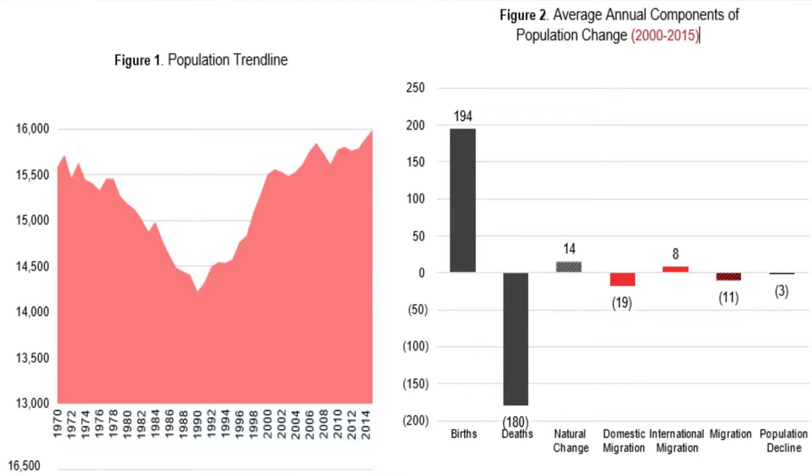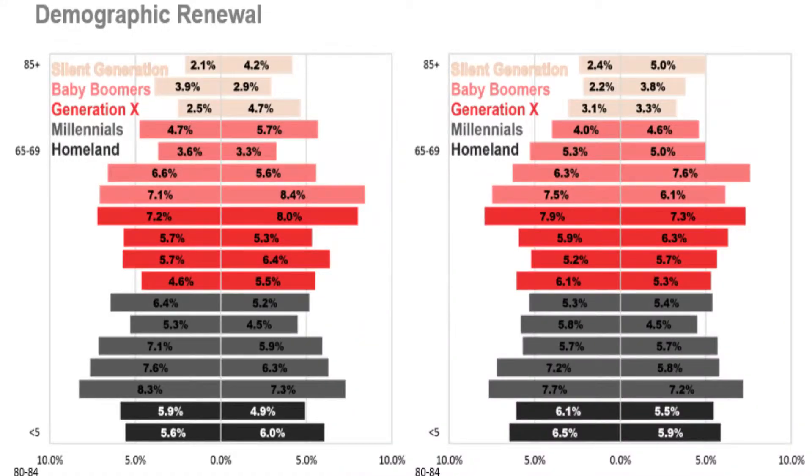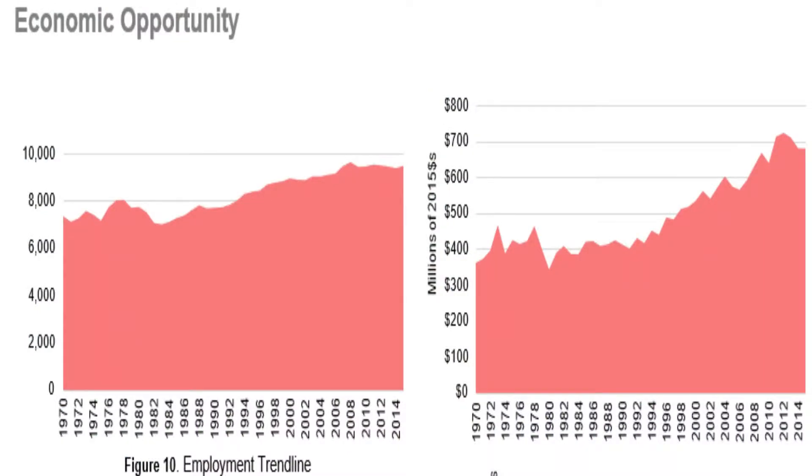Whether it's the data that he is able to provide us through the university, or facilitators — it's that established wealth of knowledge that already exists that saves us so much time. When we're trying to figure out demographics about our community, how many folks travel into our community every day for work, how many travel out — that data helps our decision-making process so much. It's not anything we could produce ourselves, and if we did, the time it would take would set this process back so far. That access has been really important.